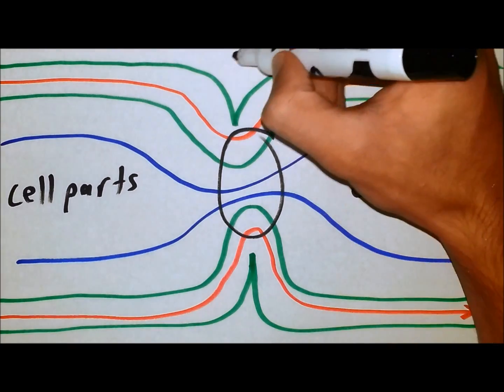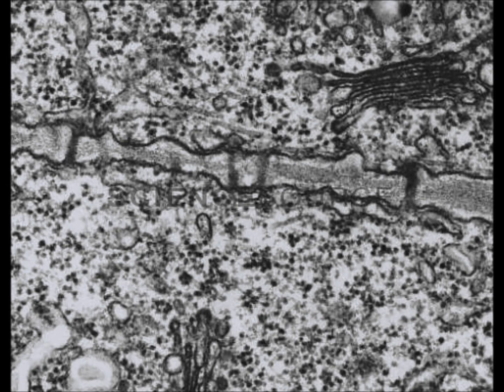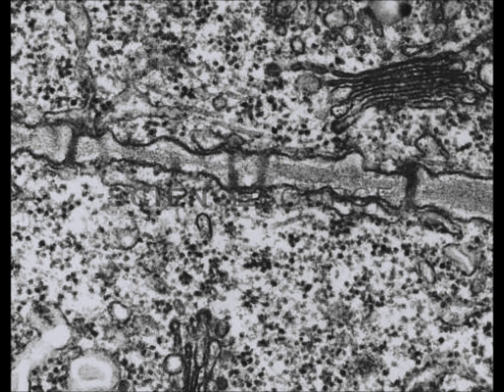The Plasma Desmata is located here. This is an example of two cells transporting through the Plasma Desmata located here, here, here, and here.